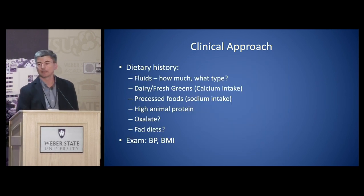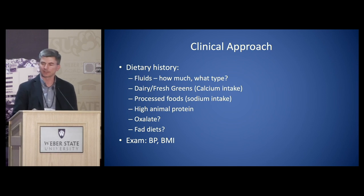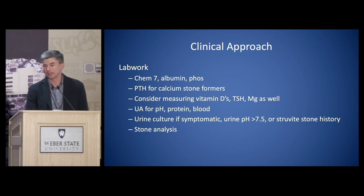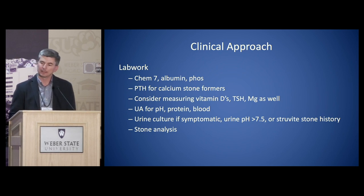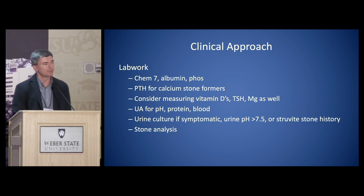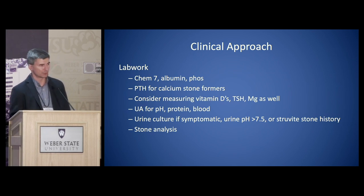I look through dietary history in terms of fluids, dairy intake, processed foods, and meat in the diet. Blood pressure and BMI are important on exam, but otherwise the exam is fairly limited for stone evaluation. Lab work starts with chemistry, calcium and albumin, phosphorus, PTH — usually for calcium stone formers — and sometimes vitamin D levels, thyroid, magnesium, and uric acid. Urinalysis can be helpful for pH, blood and protein as signs of CKD, and potentially urine culture if urine pH is very high. Stone analysis is always helpful for confirming stone type and guides therapy.